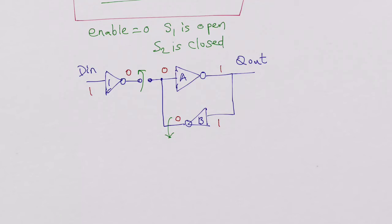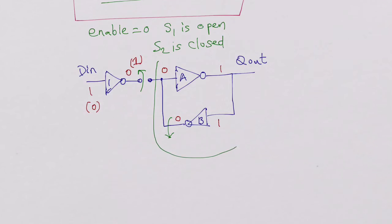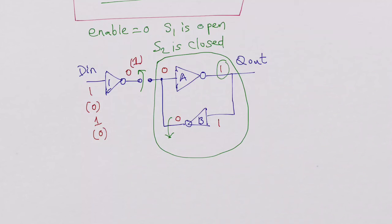Assume DN was high when enable was previously high — Q out was high. Now we open S1 and close S2, latching that previous state. If DN then changes from 1 to 0, the output of inverter 1 changes, but since S1 is open it does not pass to inverter A. The latch formed by the two back-to-back inverters holds its state. Even if DN keeps changing, Q out remains high — the output that was latched when enable was high.